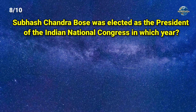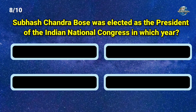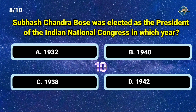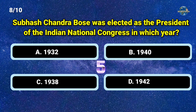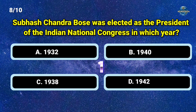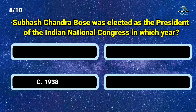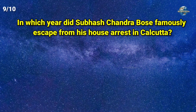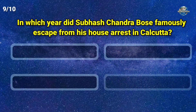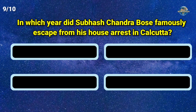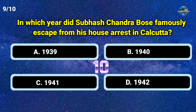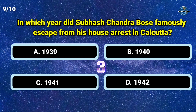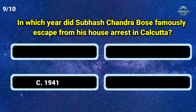Subhash Chandra Bose was elected as the President of Indian National Congress in which year? Option C, 1938. In which year did Subhash Chandra Bose famously escape from his house arrest in Kolkata?